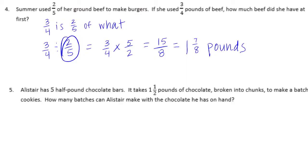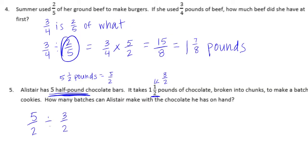And number 5. Alistair has 5 half-pound chocolate bars. It takes 1 and a half pounds of chocolate, broken into chunks, to make a batch of cookies. How many batches can Alistair make? He has 5 half pounds, which we can write as 5 halves. It takes 1 and a half pounds, or 3 halves. So we take 5 halves divided by 3 halves. Using invert and multiply: 5 halves times 2 thirds. We get 10 sixths, which is 1 and 4 sixths, or 1 and 2 thirds.